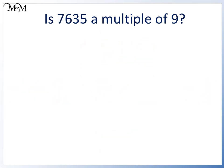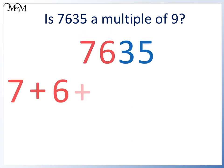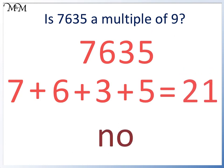Is 7,635 a multiple of 9? We add 7 plus 6 plus 3 plus 5 equals 21. 21 is not a multiple of 9, so 7,635 is not either.